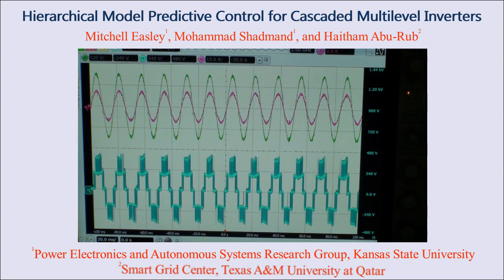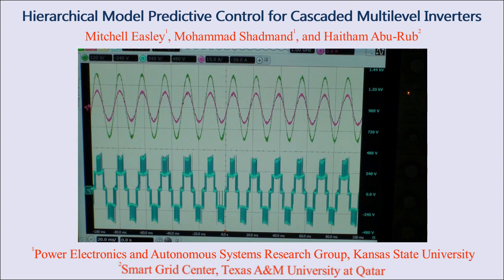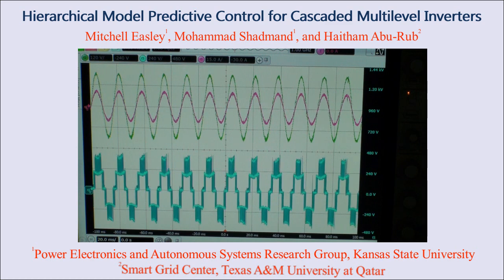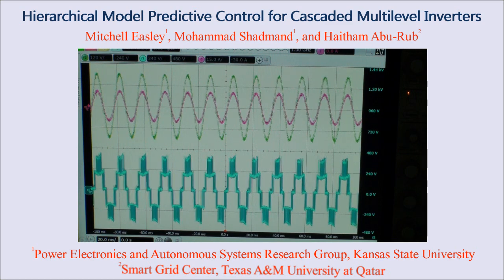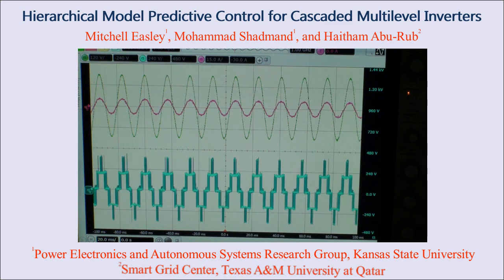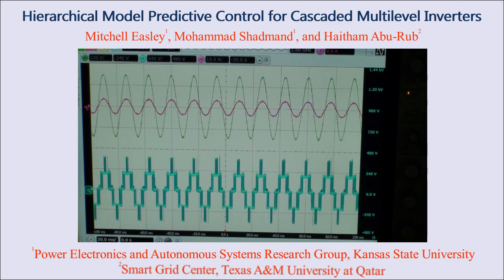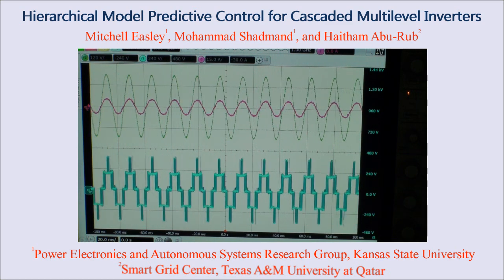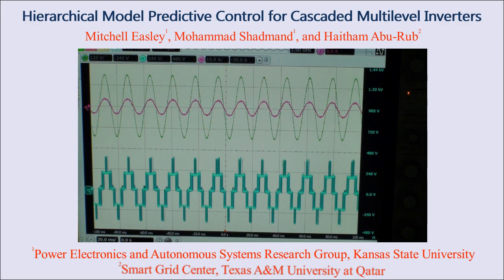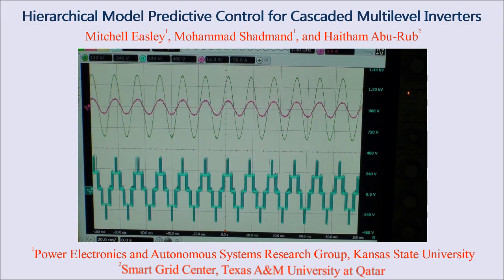I will now step down the power reference to 500 watts. Within a few samples, the grid current amplitude is decreased to track the new power reference, and stability is maintained.